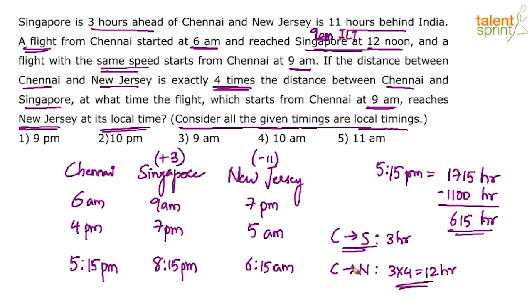This flight will be for 12 hours. We started from Chennai at 9 am, so after 12 hours we will reach New Jersey at 9 pm Indian time. We will reach New Jersey at 9 pm Indian time. But the question asks for New Jersey's local time, so we need to convert.